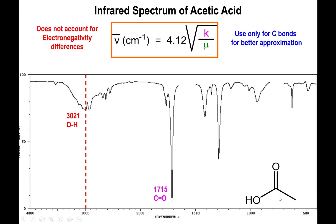First things first, you do have a carbonyl bond present, so you do see that strong peak appearing roughly in the 1700 region. Notice that this value is a little bit lower than what we saw for the aldehydes and ketones — there we were looking at values of about 1720, 1730. These ones are going down to about 1710, roughly speaking.